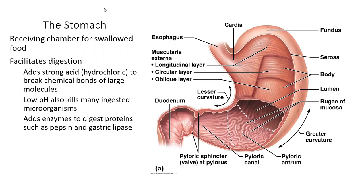The stomach is a receiving chamber for swallowed food coming from the esophagus. It aids digestion by adding hydrochloric acid — the pH is approximately one, so it's a very concentrated acid. Your stomach lining secretes mucus to help protect the stomach from the acids. These acids help kill many organisms that we might consume from the outside. It also adds enzymes to break down proteins — the most well-known being pepsin — and gastric lipases, which break down triglycerides or fatty acids.